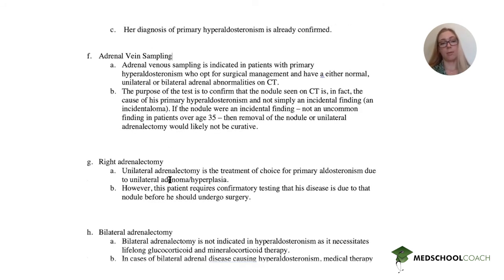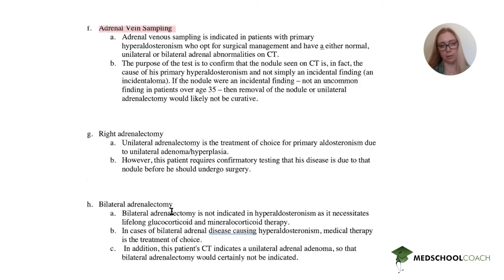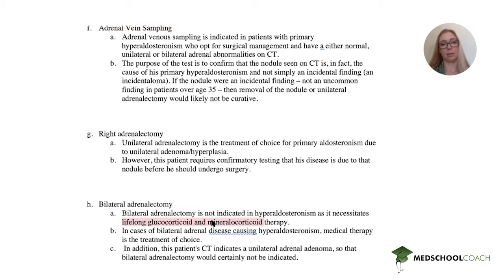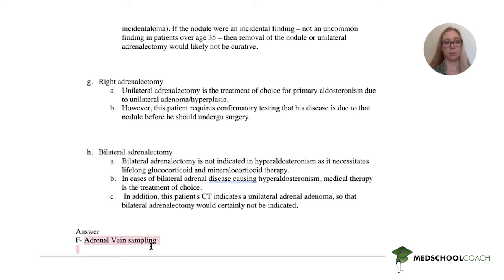A unilateral adrenalectomy — even though we see a nodule on the right — without adrenal vein sampling, we can't confirm that nodule isn't just an incidentaloma. A bilateral adrenalectomy is definitely not indicated without prior testing, because the patient may then need lifelong glucocorticoid and mineralocorticoid therapy. If a patient has bilateral disease, you'd just give medication to control it. So the answer is adrenal vein sampling — you need to confirm where the issue is before surgery.